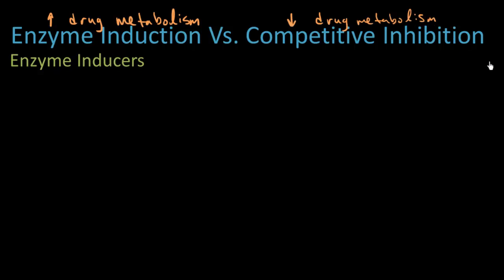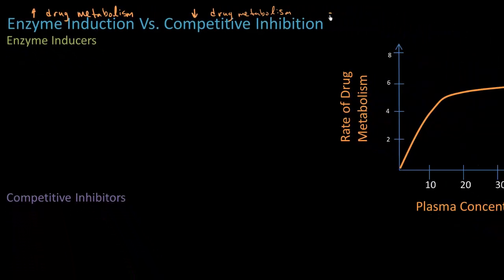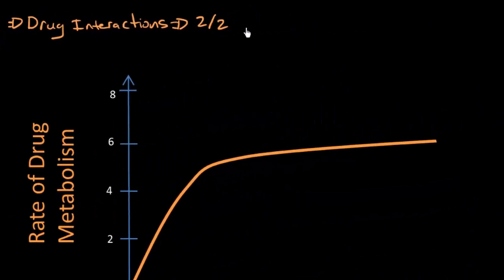Remember that metabolism is occurring at the level of the enzymes. This is important because we're starting our discussion of drug interactions — a unique type of drug interactions that are secondary to changes in enzyme activity.